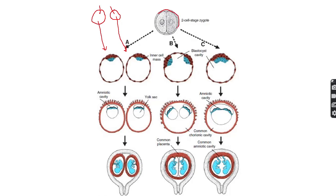In monozygotic twin pregnancy, a single zygote is formed. If this zygote splits very early in development, it produces two separate blastocysts and two inner cell masses, allowing two chorions, two separate placentas, two amniotic sacs, and two yolk sacs to form. This type of pregnancy is known as dichorionic diamniotic twin pregnancy.